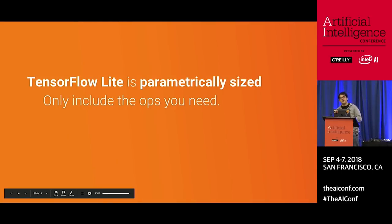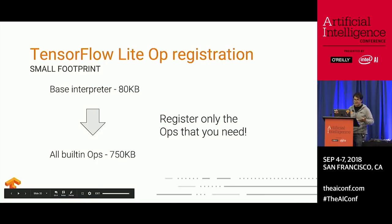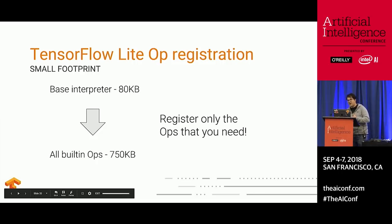The third property is that it's parametrically sized. TensorFlow Lite needs to fit on small devices, especially very small ones like MCUs, where you might need to include only the ops you need. Our base interpreter is about 80 kilobytes, and with all built-in ops it's 750 kilobytes. We're moving to a world where you can parameterize what goes into the TensorFlow Lite interpreter, trading off the ability to handle new ops against shipping only what you need in your application.